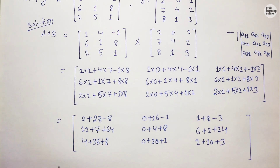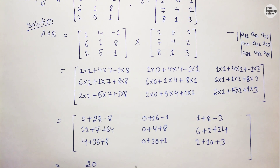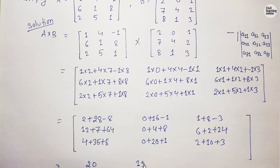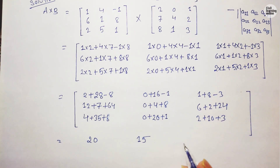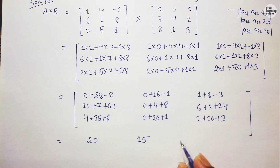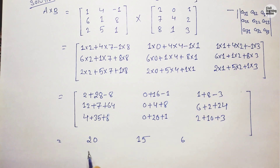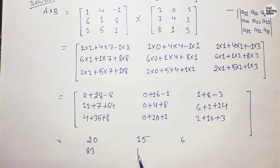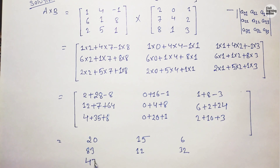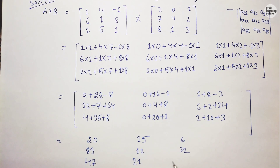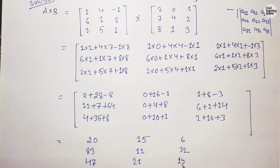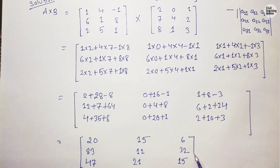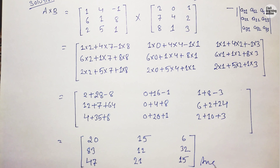Doing the final addition, we have: 20, 15, and 6 for the first row. For the second row: 80 (corrected as per arithmetic), 12, and 32. For the third row: 47, 21, and 15. This is how we do the multiplication of a 3×3 matrix, and this is our final answer.